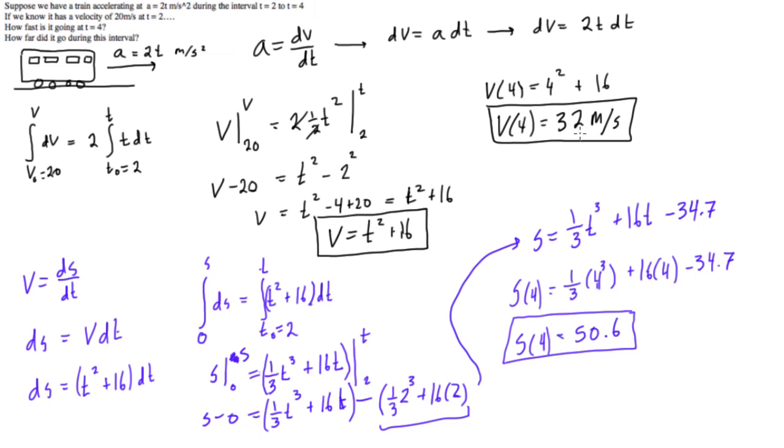So anyways, there we have it. We found the velocity like the question asked. Velocity at 4 seconds is 32 meters per second. The distance it traveled between 2 seconds and 4 seconds is 50.6 meters. And there we go.